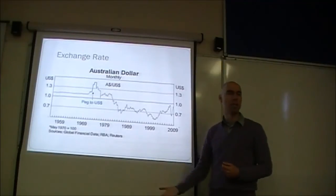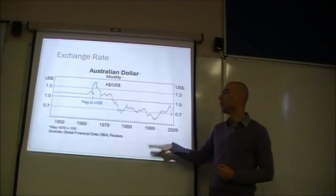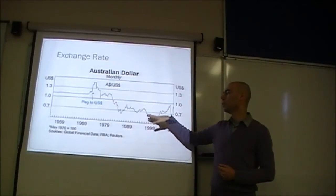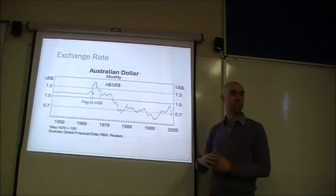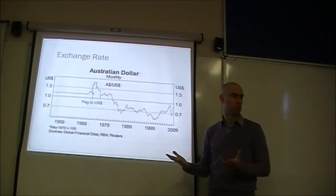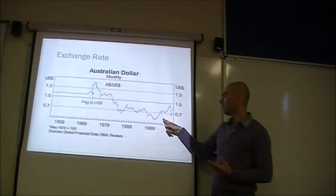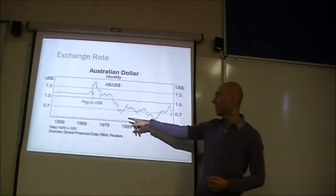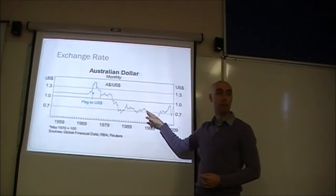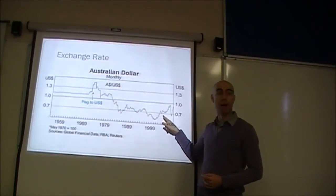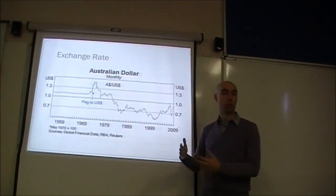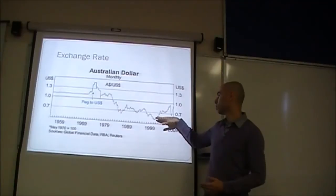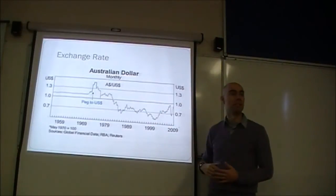Sometimes it went up to 90, sometimes it fell down to about 50. But on average, you can see that it averaged about 70 cents in this period. What has happened recently since the mid-noughties is that average has changed. So you had these cyclical movements up and down prior to that. Since then, you had this structural shift. The average has moved from 70 cents up to about 90 cents.